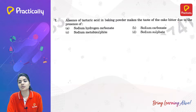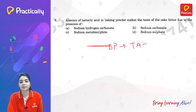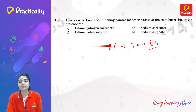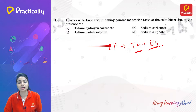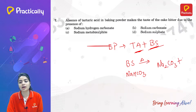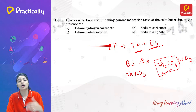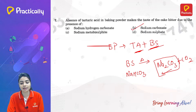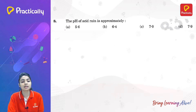The absence of tartaric acid in baking powder makes the taste of a cake bitter due to the presence of sodium carbonate. Baking powder is a mixture of tartaric acid and baking soda — the acid neutralizes the base for a better taste. Without tartaric acid, heating baking soda (NaHCO₃) forms Na₂CO₃ (sodium carbonate) and CO₂, giving the taste of washing soda. So sodium carbonate is the correct answer.